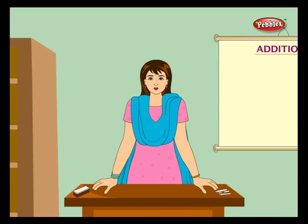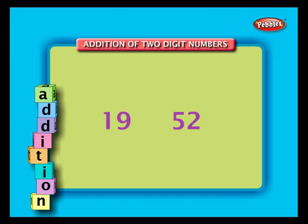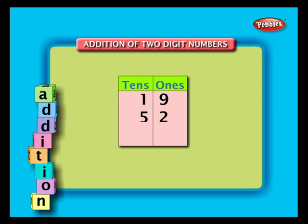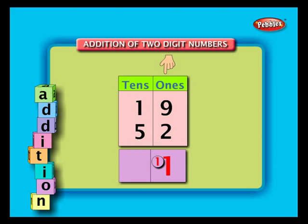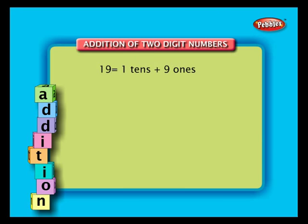Addition of two-digit numbers with carrying. Let us understand this with some examples. Example one: add the numbers 19 and 52. Arrange them in columns. Add the ones column — nine plus two is equal to 11. We cannot write 11, which is a two-digit number, below the ones column. So we write the ones digit of 11 below the ones column, that is 1, and carry over the tens digit of 11, that is 1, to the top of the tens column. Now add the tens column — one plus five plus one (the carry-over) — we get seven. So 19 plus 52 is equal to 71.